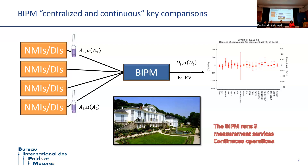Here comes the second asset of the BIPM key comparison. Because we have a continuous operation, the KCAV is continuously refined to obtain very precise KCAV and relevant degrees of equivalence. This is not possible for key comparisons organized by other bodies, where the KCAV is valid for only a limited period of time.